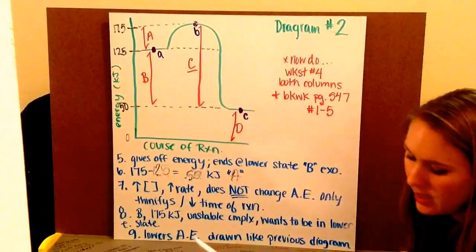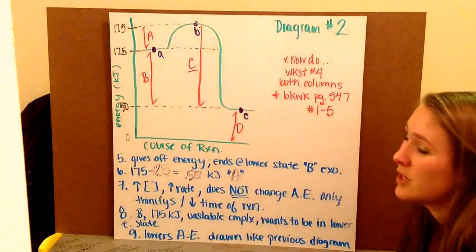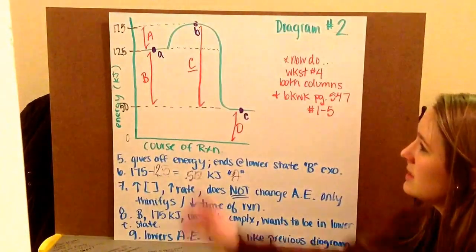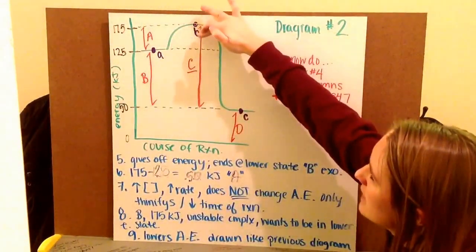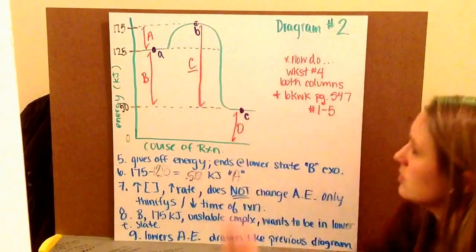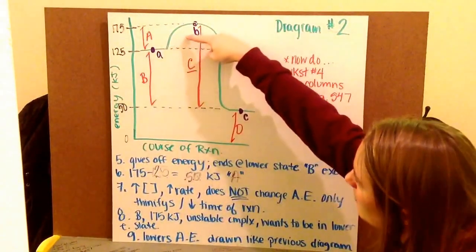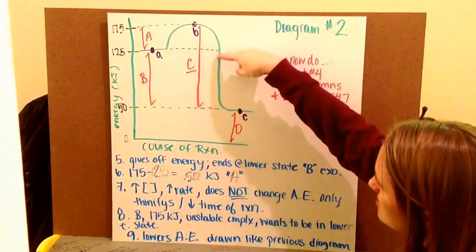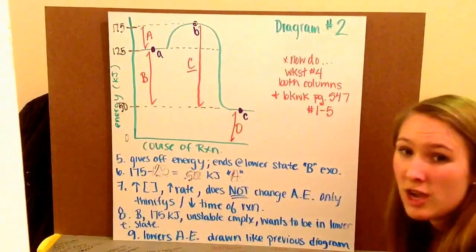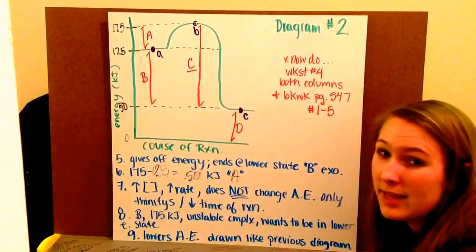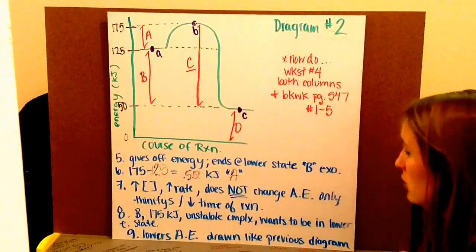Number nine asks, how would introducing a catalyst change the diagram? Well, just like before, introducing a catalyst is going to decrease my activation energy. So instead of 175 kilojoules, it could be something like 150 kilojoules. And I would draw the same as I did before, just with a dotted line coming up a little bit, and then coming down and intersecting back with my line. Again, it just offers an alternative pathway that has less resistance. It's easier for the reaction to proceed.